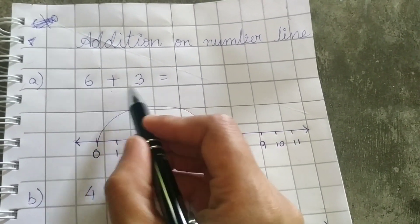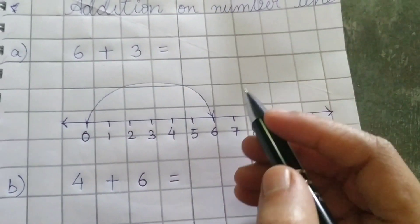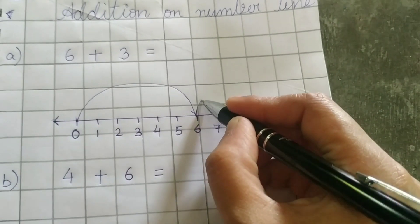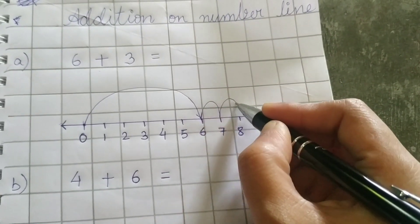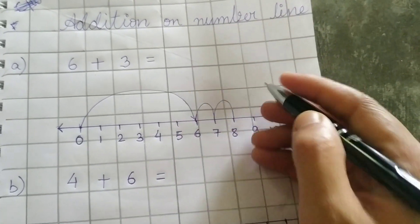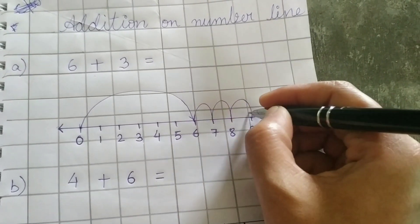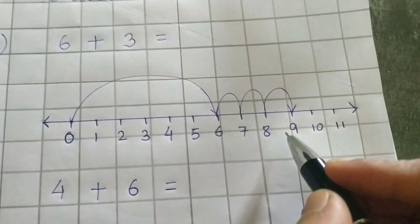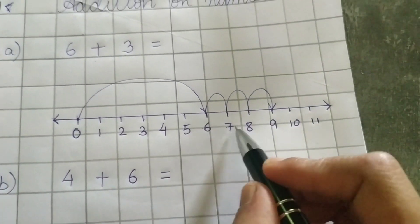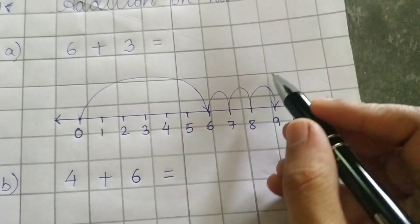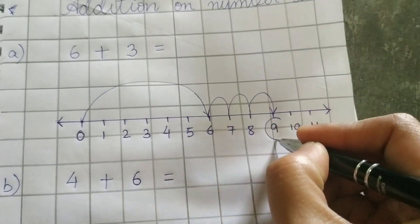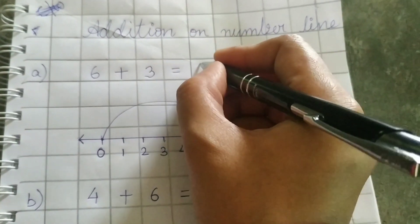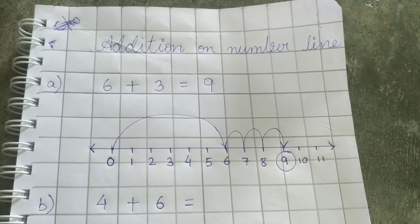Now keep a small arrow like this. Plus how much? 3. So jump how many boxes? 3 boxes like this. 1, 2 and 3. So what is the answer? The answer is 6, 7, 8, 9. So 9 is the answer. Correct. Write down here 9.